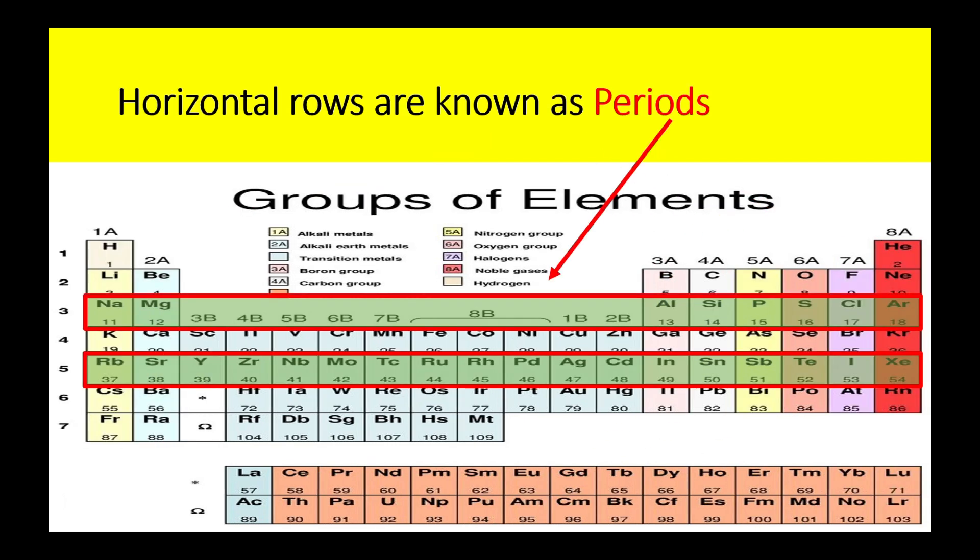Then we have periods — horizontal rows are known as periods. We have seven periods. In the first period you can see we have two elements, while in the second period we have lithium, beryllium, boron, carbon, nitrogen, oxygen, fluorine, and neon. Here I have highlighted two periods: period number 3 and period number 5.